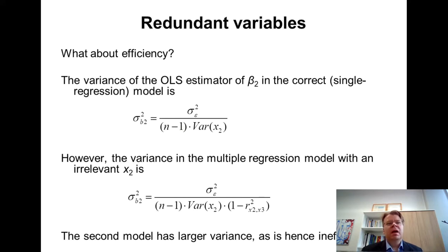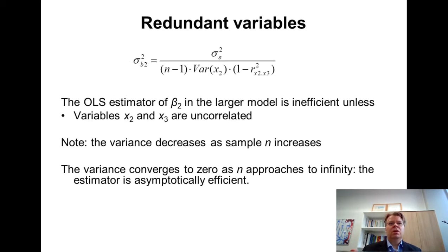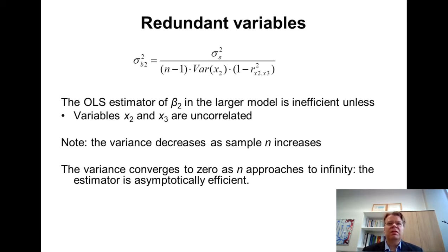So including a redundant variable adds to the variance of the estimator — it makes the OLS estimator less efficient. There is no sense in putting arbitrary variables that have nothing to do with the regression model. This loss of efficiency critically depends on the correlation between x2 and x3. If there is no correlation whatsoever, the loss of efficiency is relatively small. It also depends on sample size and variance of x2, so it is a good idea to have as large a sample as possible.